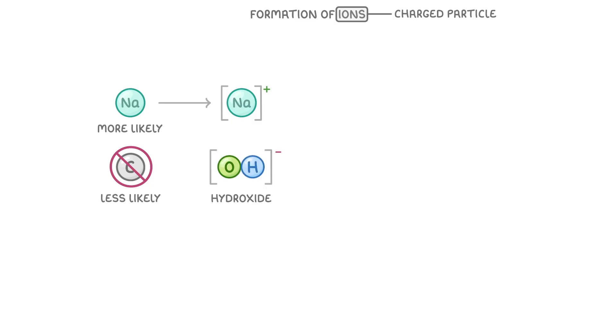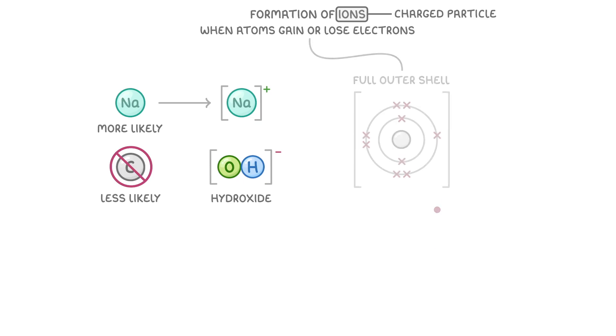As we've seen in our video on electron structure, ions are formed when atoms gain or lose electrons, and they do this in order to have a full outer shell, so that they're more stable.